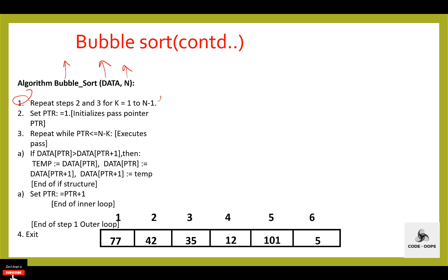For k from 1 to n minus 1. The first step controls the number of passes. If the number of elements are 6, the number of passes will be 5. Then in the second step, set ptr equal to 1. Repeat while ptr is less than or equal to n minus k. ptr is 1, and 1 is less than or equal to n minus k, which is 6 minus 1 equals 5. 1 is less than or equal to 5, so condition is evaluated to be true.